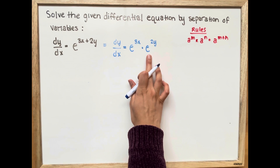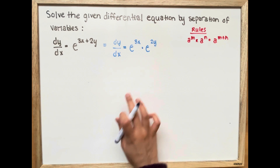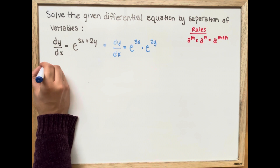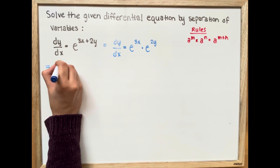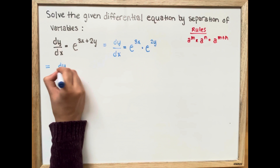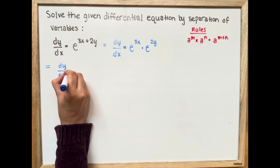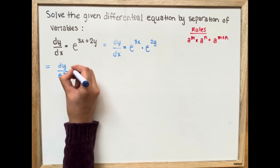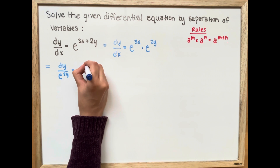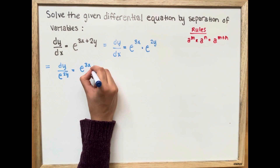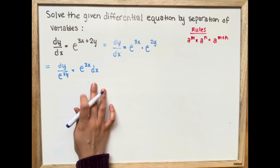Next, we're going to move all our y's to the left side and the x's to the right side. So this is going to equal dy divided by e to the power of 2y, equals e to the power of 3x dx. And now we're going to take the integral of both sides.